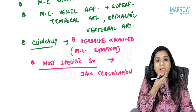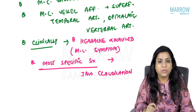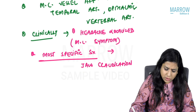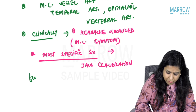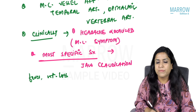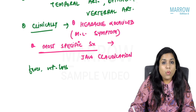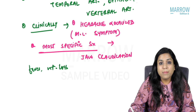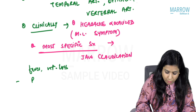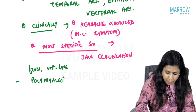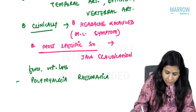Other non-specific symptoms include fever and weight loss, which are present in all different kinds of vasculitis. Giant cell arteritis can also present with polymyalgia rheumatica.